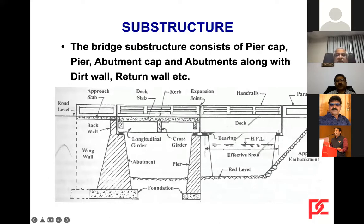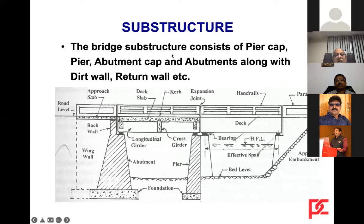Having finished the types of foundations, we now go to substructures. The bridge substructure consists of pier cap, pier, abutment cap, abutment along with dirt wall, return wall, etc. A typical minor bridge has an abutment, a pier, a wing wall, and a backup wall, with approach embankment — these are all shown here.